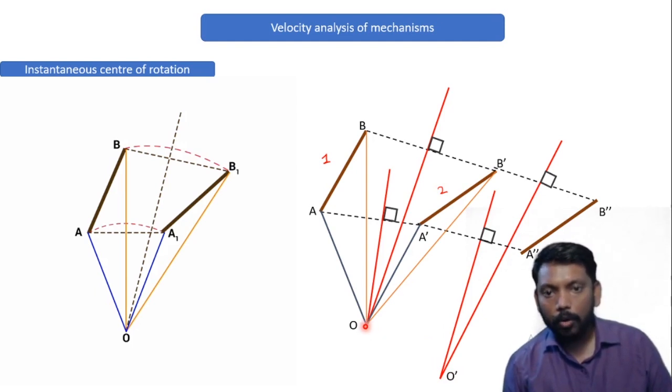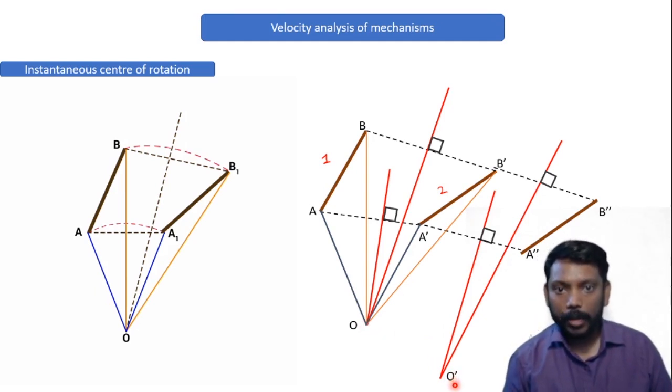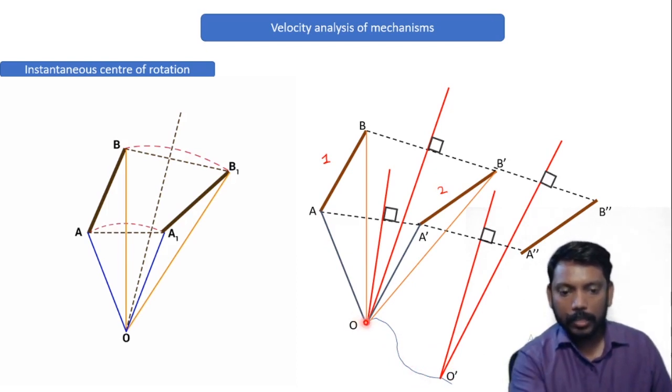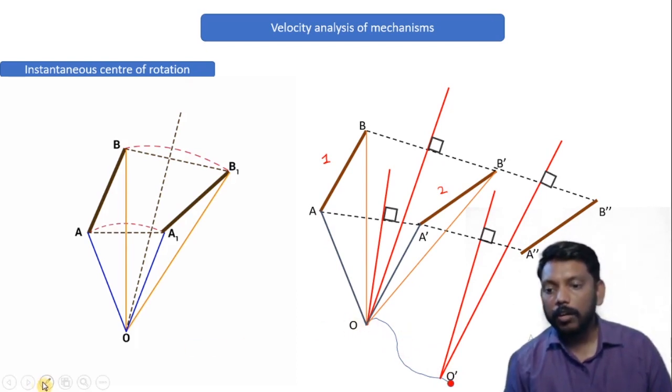Let us name this point as O-dash. Matlab, jahan par pehle ICR tha O, abhi naya ICR ban rahe hai O-dash. Matlab, ho kya raha hai? Jab position 1 se position 2 par move kiya, to us instant par ICR kaun sa tha? Ye. Aur jab position 2 se position 3 par aa rahe hai, tab us instant par ICR kya tha? Ye. Isse ye bahut important cheez pata chalta hai ki, ICR is actually moving from position O to new position that is O-dash. Agar maine in saare motion ka agar ek locus trace kiya, matlab jahan se yahan tak aa raha tha, uska agar locus trace kiya, I'll get a curve. And this particular curve of ICR is called as Centrode.